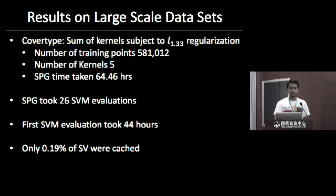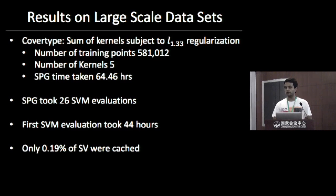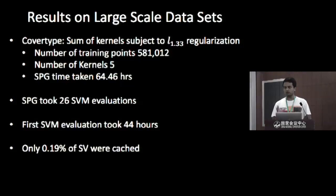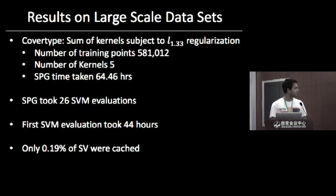Moving to results: we experimented with four different MKL formulations to show our optimizer is generalized, testing with both large-scale and small-scale experiments with varying numbers of kernels. On the Cover Type dataset with approximately half a million training points — one of the largest datasets on which a single-kernel SVM can be trained — we trained a multiple kernel using five base kernels. SPG took around 64 hours, but only required 26 inner SVM evaluations. The first 44 hours were spent on just the first SVM evaluation, and memory usage was minimal with only 0.19% of support vectors cached.